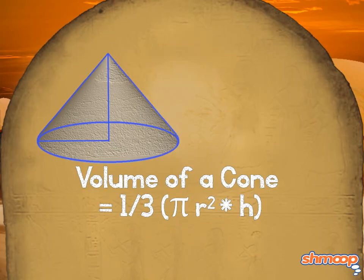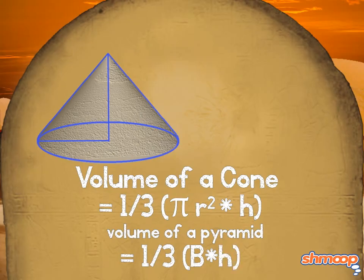If we look closely at the volume formula of a cone, it looks a lot like the volume formula of a pyramid, since pi times radius squared is the area of a circle, which is the shape of a cone's base, and b is the area of the base of a pyramid.